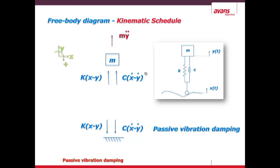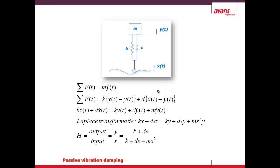In dynamics, what you do is add all the arrows of the free body diagram — the blue ones — and set them equal to the kinematic schedule, which is the mass multiplied by the acceleration. That gives you this equation over here.